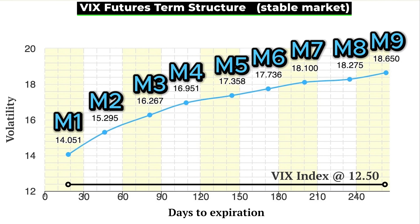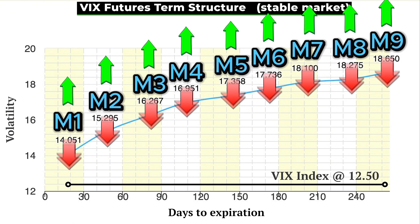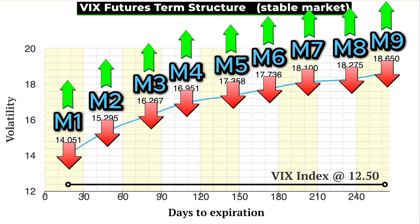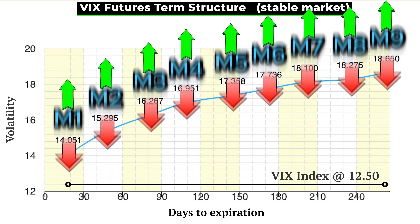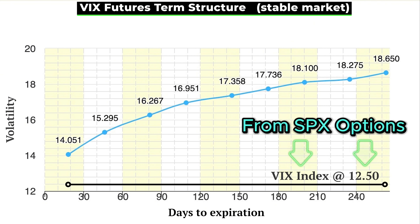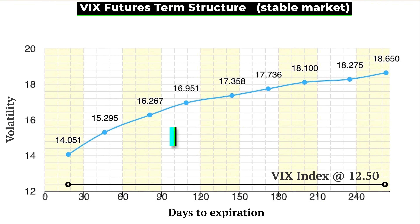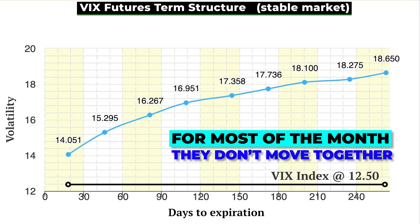These VIX futures — one for every month going out in time — are freely traded. It's just market participants buying and selling based on where they think volatility will be going forward. The VIX index is derived from S&P 500 options activity. These do decouple completely throughout most of the month; there is no direct causation here.